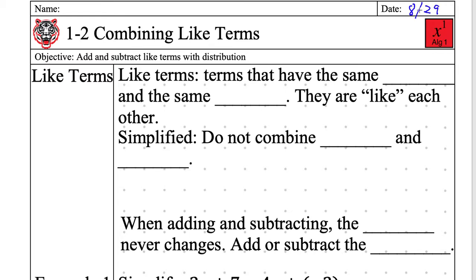Make sure your name and date are on your paper. Quiet raised hand — always assume quiet raised hand for my class unless I say otherwise. Who can read the objective for us? Kira: 'Add and subtract like terms with the string.' Perfect, and she gets 50 XP.